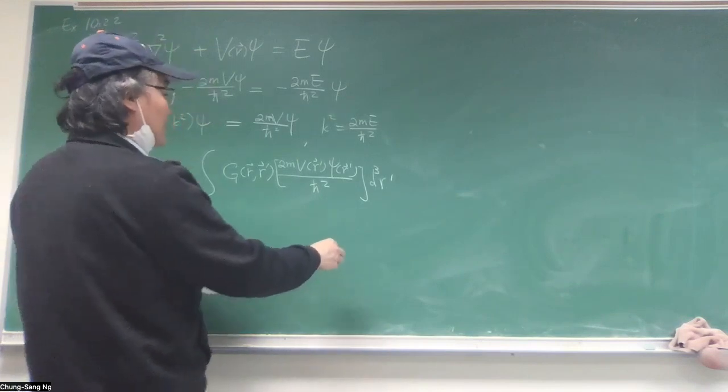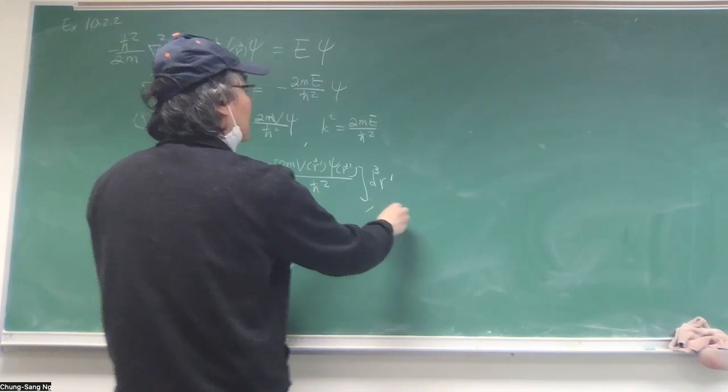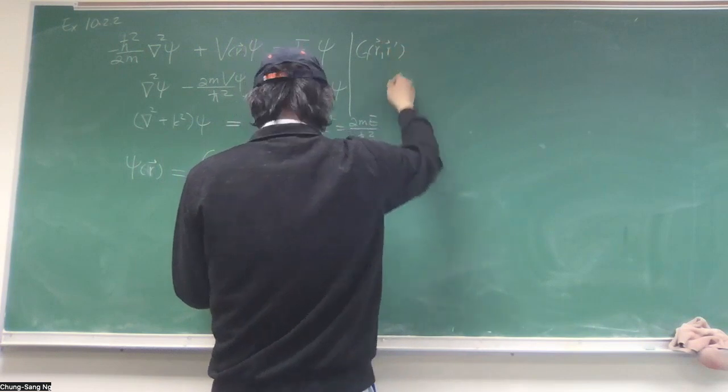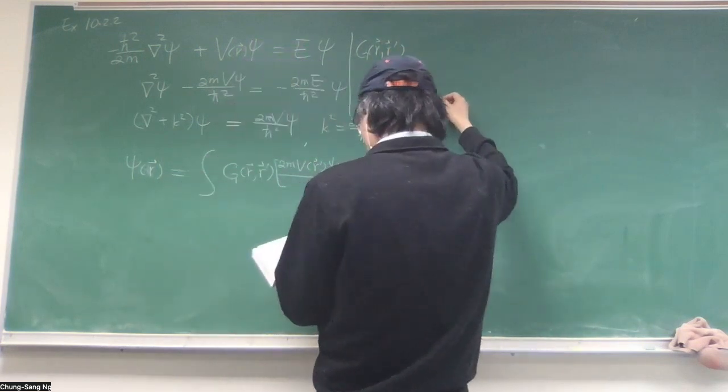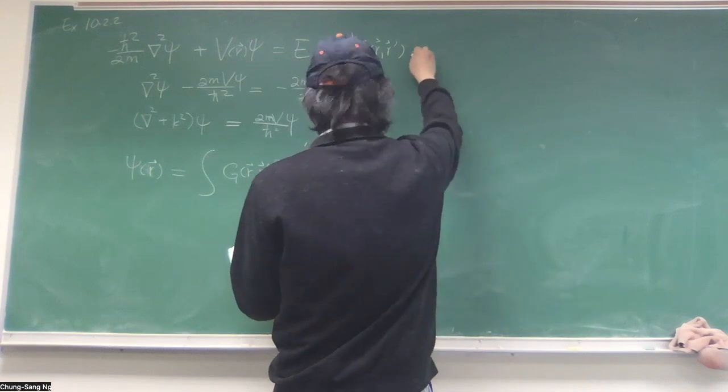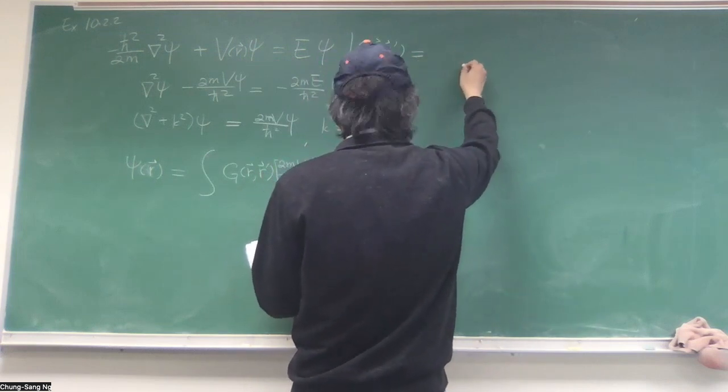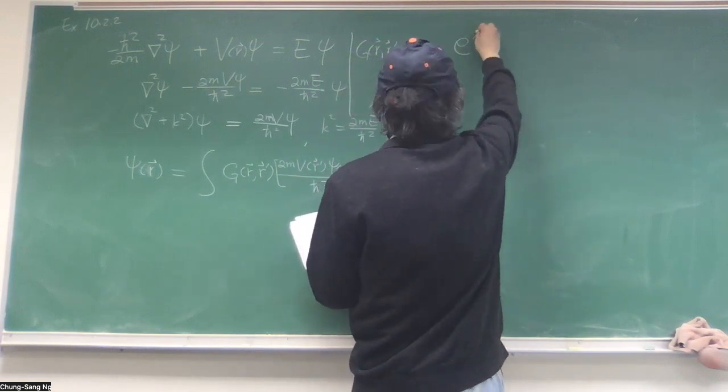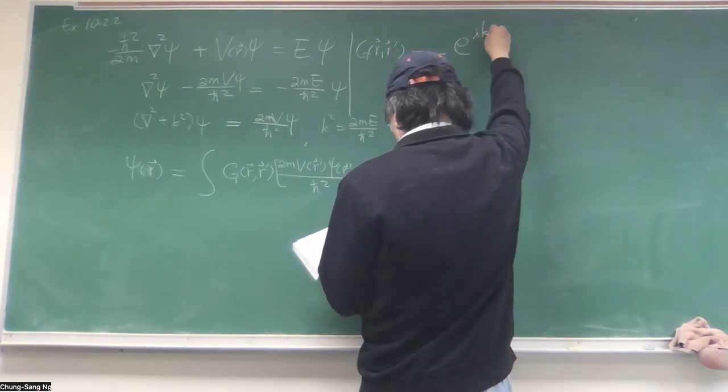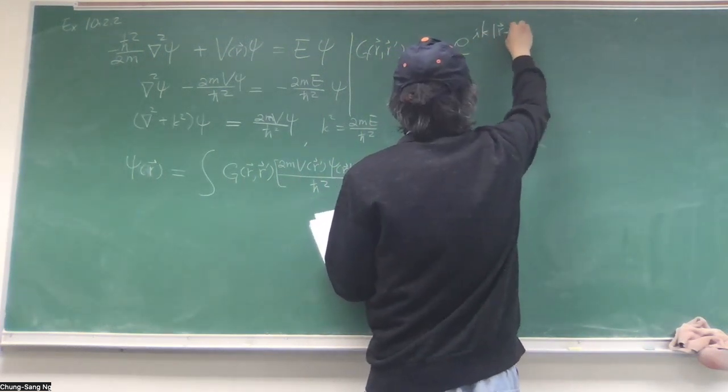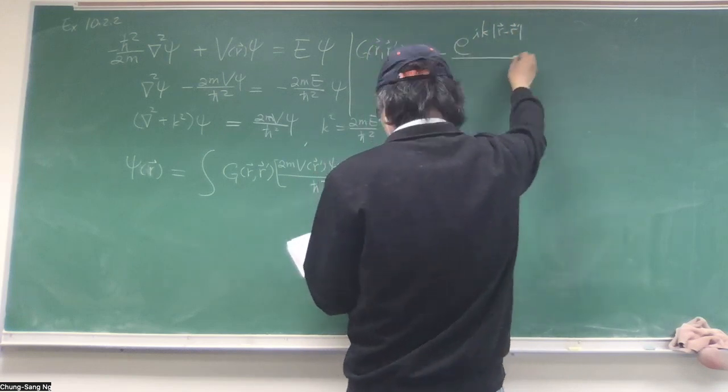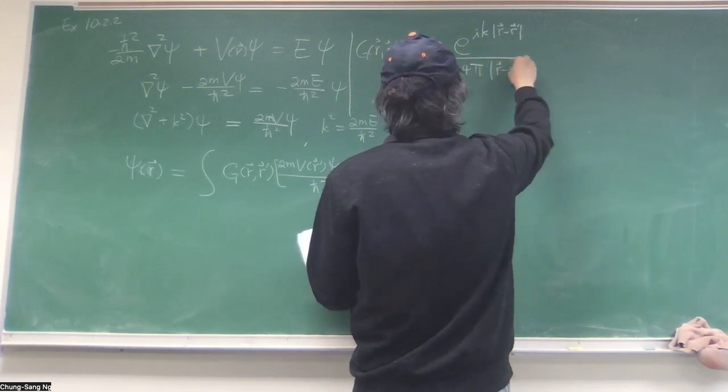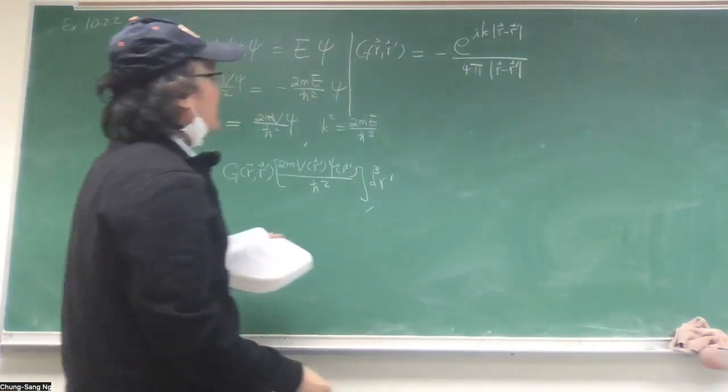The only problem is that the psi in the integral also. So this makes it, instead of a solution, this becomes an integral equation. So let me write down the Green function. From the table, this is in 3D, assuming in 3D, look at the 3D is minus exponential function.